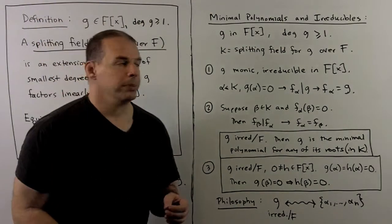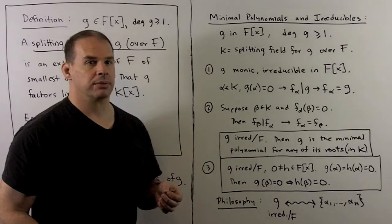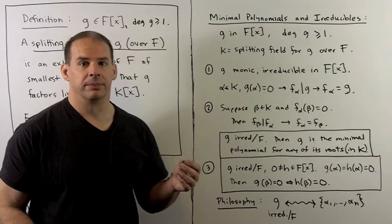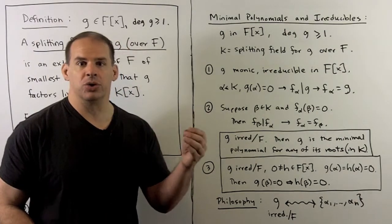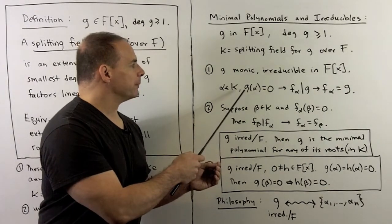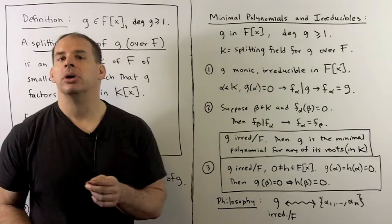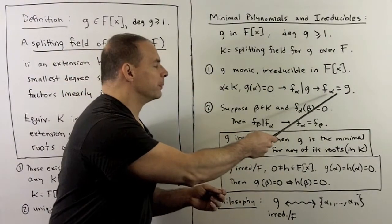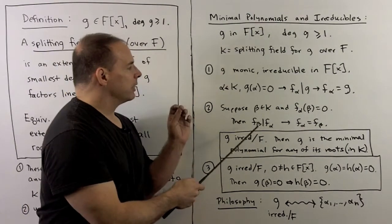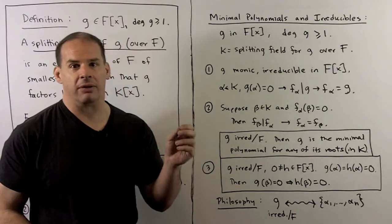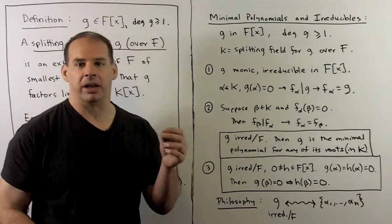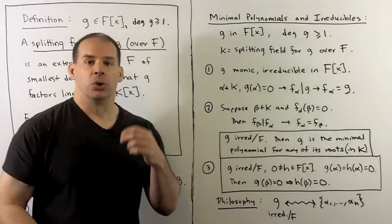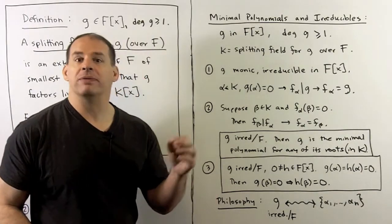With the notion of a splitting field, we can clean up ideas about minimal polynomials and irreducibles. Suppose we have a non-constant polynomial g with coefficients in f, and we choose k a splitting field for g over f. If g is monic and irreducible and alpha is a root of g, then the minimal polynomial for alpha over f divides g, but because they're both monic and irreducible, they must be equal. If beta is also a root of the minimal polynomial for alpha, then the minimal polynomial for beta over f divides the minimal polynomial for alpha over f — both irreducible and monic, so they must be equal.